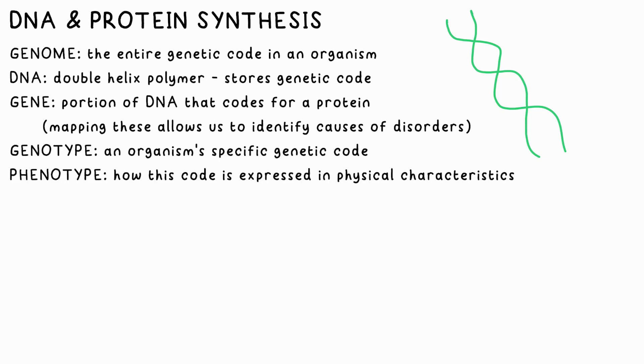Genotype is the term given to what specific code is stored in an organism, while phenotype is how that code is expressed in your characteristics — what proteins are made.